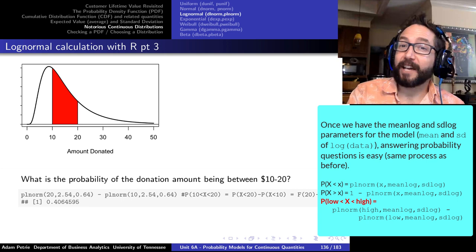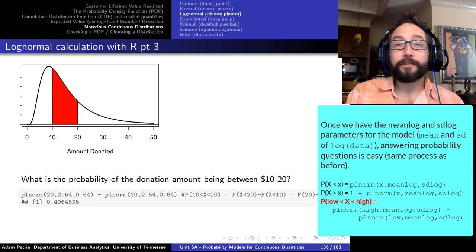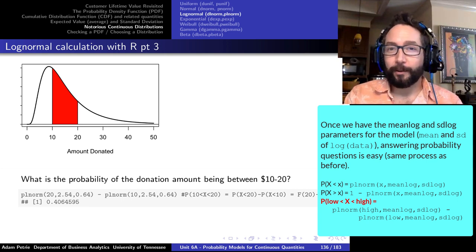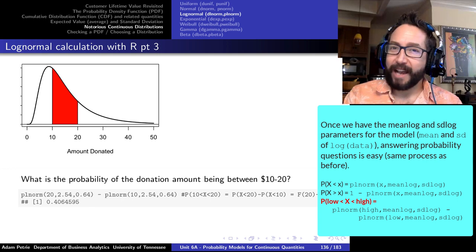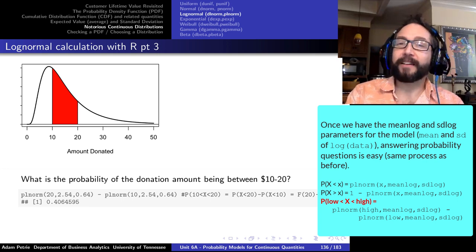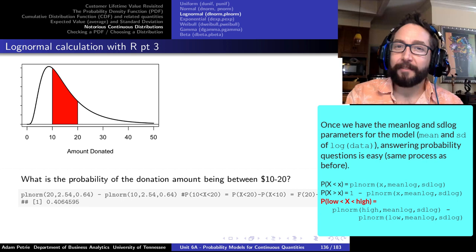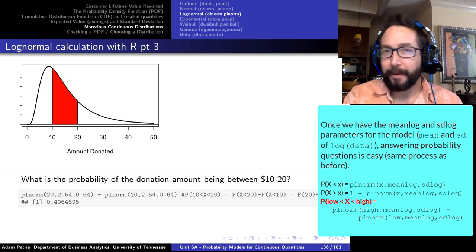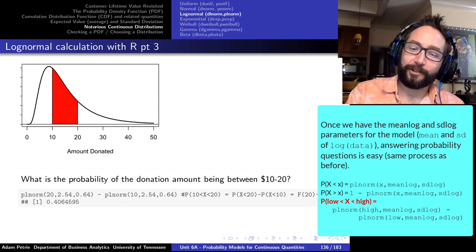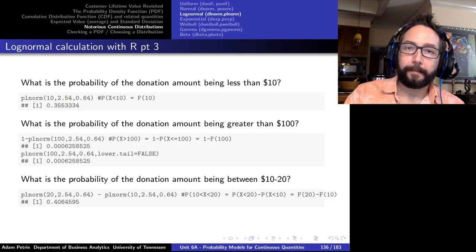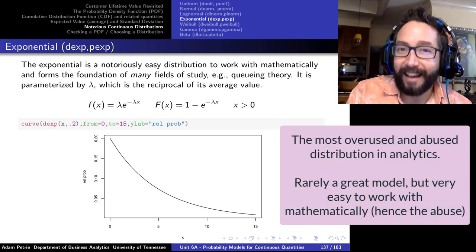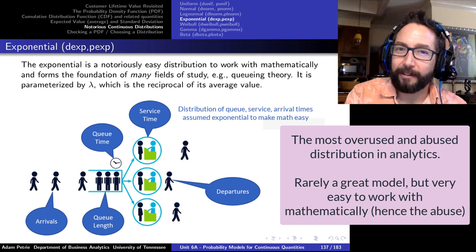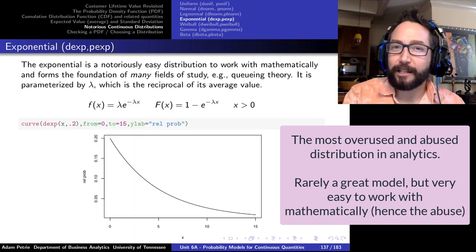For a range — say between $10 and $20 — we use two plnorm calls: plnorm evaluated at the upper endpoint minus plnorm at the lower endpoint. Whenever we're asked for the probability of a range of values, it's always the P function evaluated at the top minus the P function evaluated at the bottom. Another notorious distribution seen a lot in queuing theory — measuring wait times, service times, processing times — is the exponential distribution.